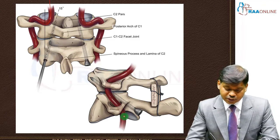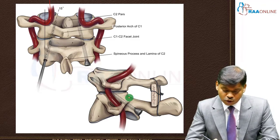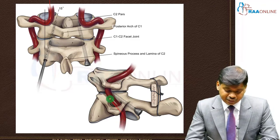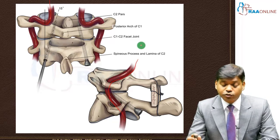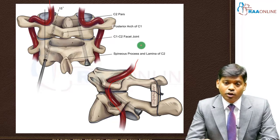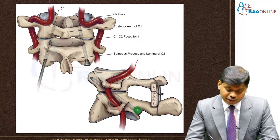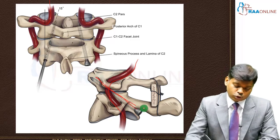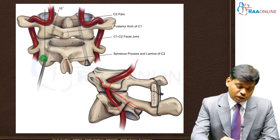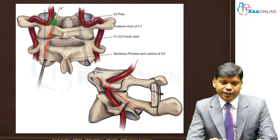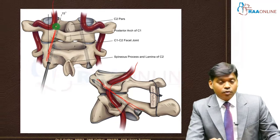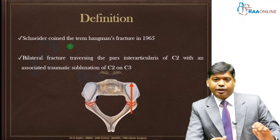Similarly, if you see in the sagittal view, it goes anterior, then comes posterior and curves medially. So when you are putting a C1-C2 transarticular screw — which goes and fuses the C1-C2 joint — you have to be very careful that you are not hitting the vertebral artery.